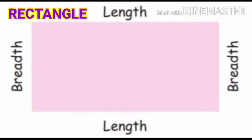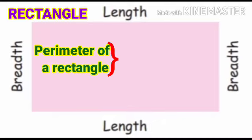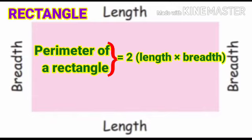Next let's look at the rectangle. In a rectangle, opposite sides are equal. Top and bottom are the length, left side and right side are the breadth.